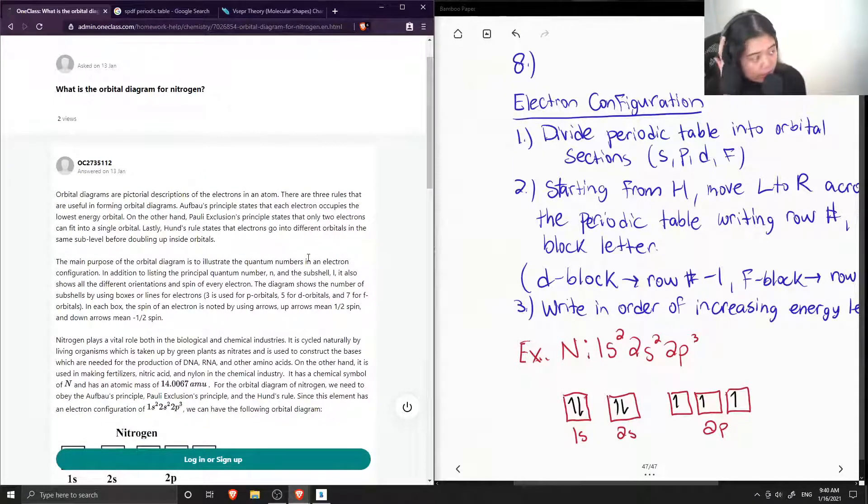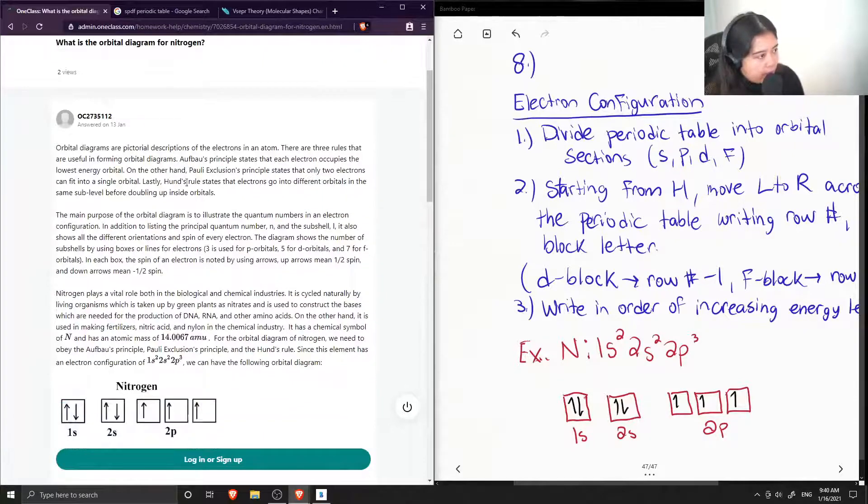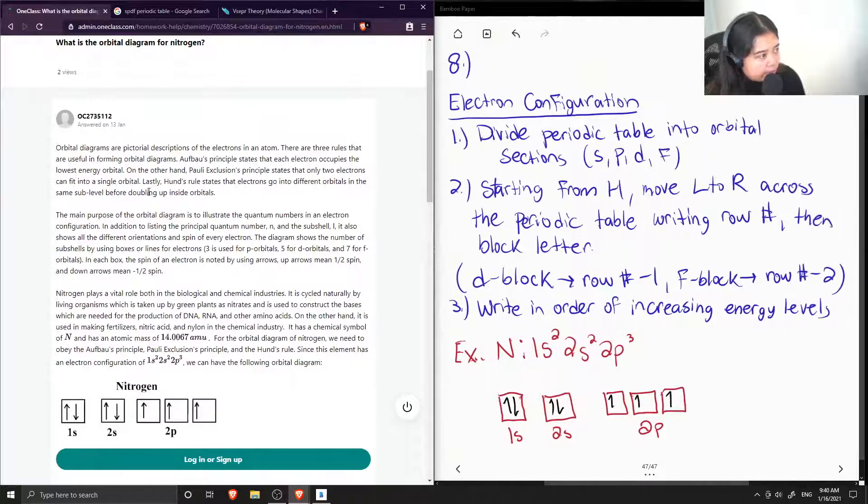So the junior tutor said that orbital diagrams are pictorial descriptions of the electrons in an atom. There are 3 rules that are useful in forming orbital diagrams. Aufbau's principle states that each electron occupies the lowest energy orbital. And on the other hand, the Pauli Exclusion principle states that only 2 electrons can fit in a single orbital. Lastly, Hund's rule states that the electrons go into different orbitals in the same sub-level before doubling up inside orbitals.